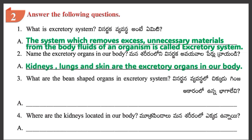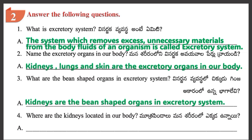Question 3: What are the Bean-Shaped Organs in the Excretory System? Answer: Kidneys are the Bean-Shaped Organs in the Excretory System.